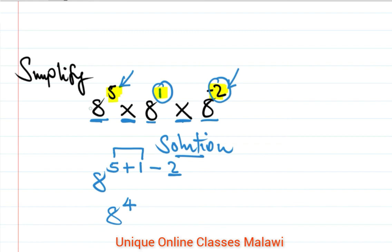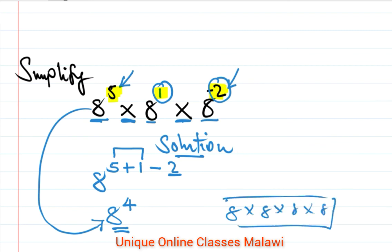So we've simplified it as 8 to the power 4. Since we're working with indices, we just leave it as 8 to the power 4.